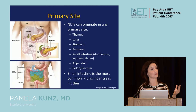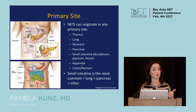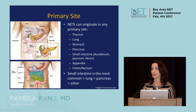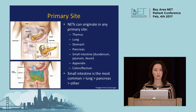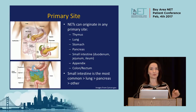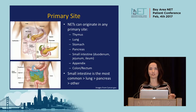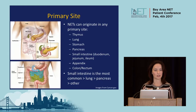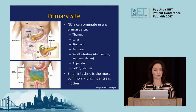The small intestine is comprised of three parts: the duodenum, the jejunum, and the ileum. Then there's the appendix, which attaches right at the junction of the small and the large intestine, and then the colon and the rectum.